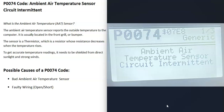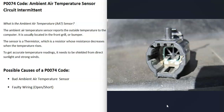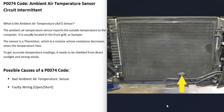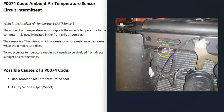What would be some possible causes of a P0074 code? The first thing that could cause it is that the sensor has just gone bad and needs to be replaced. These ambient air temperature sensors are usually located up behind the front grill or behind the bumper, although it can vary. It is very common for them to be located up behind the front grill, so the first thing to do is go locate where it's at on your particular vehicle.